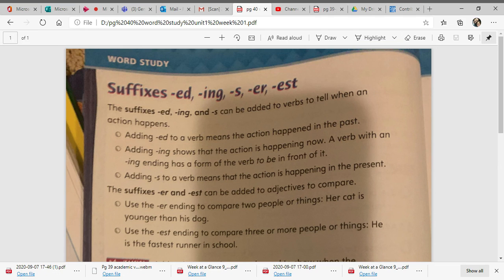The suffixes ed, ing, and s can be added to verbs to tell when an action happens. Adding ed means the action happened in the past. Adding ing shows that the action is happening now. A verb with an ing ending has a form of the verb to be in front of it. Adding s to a verb means that the action is happening in the present.